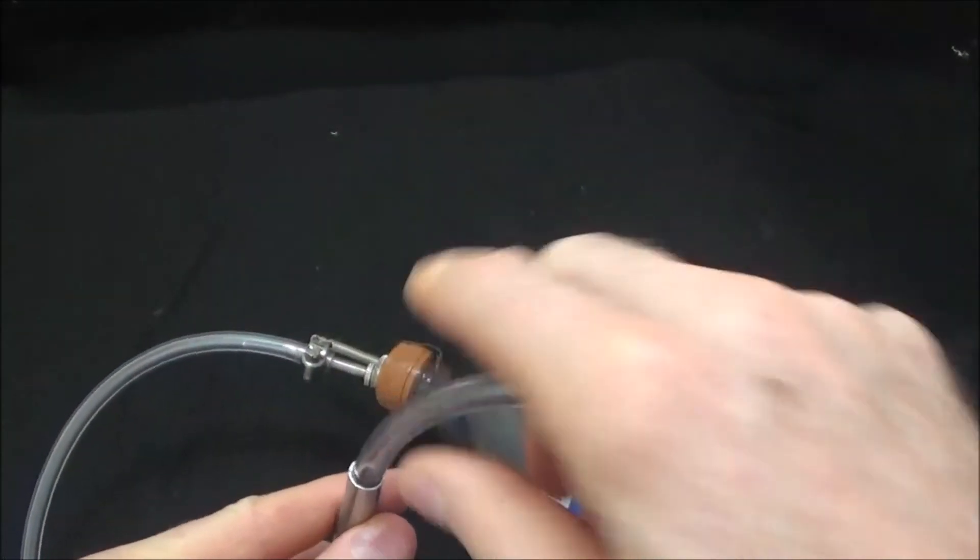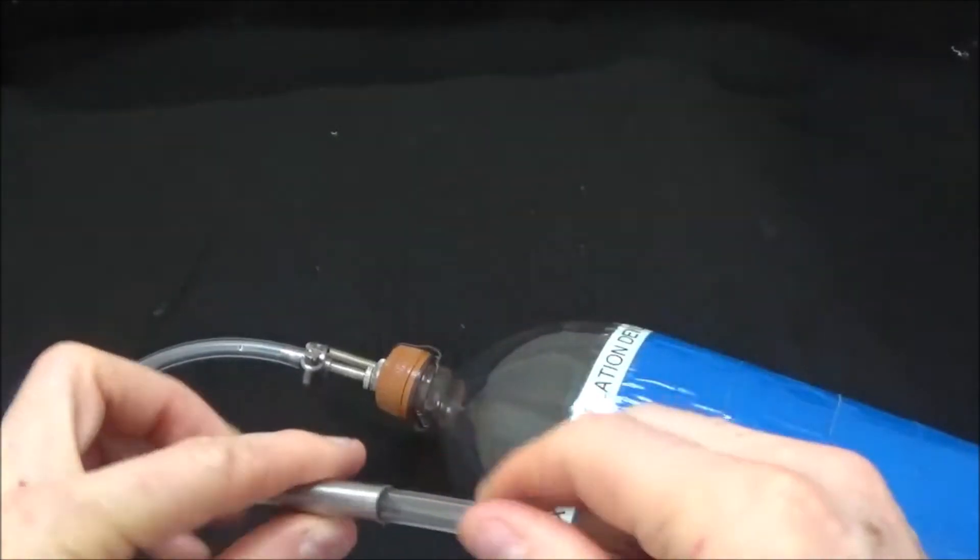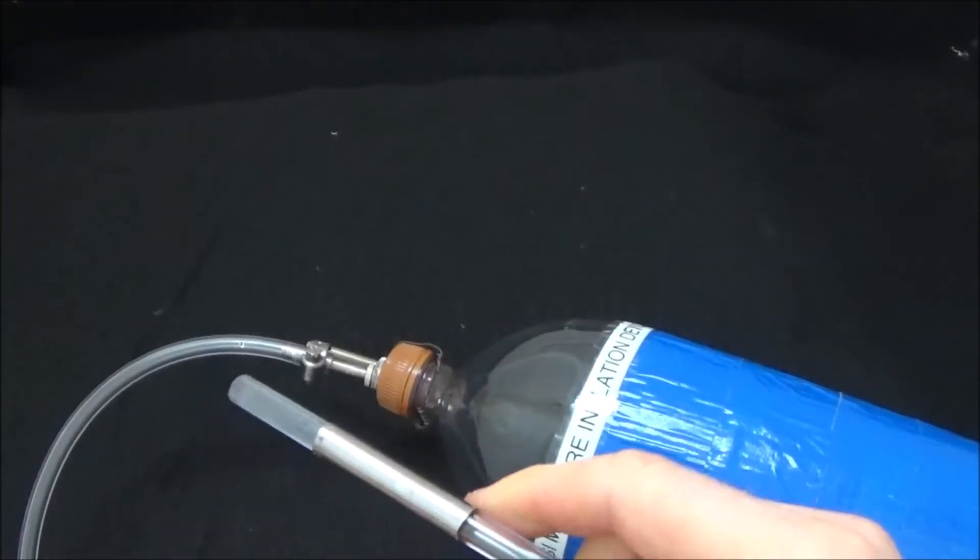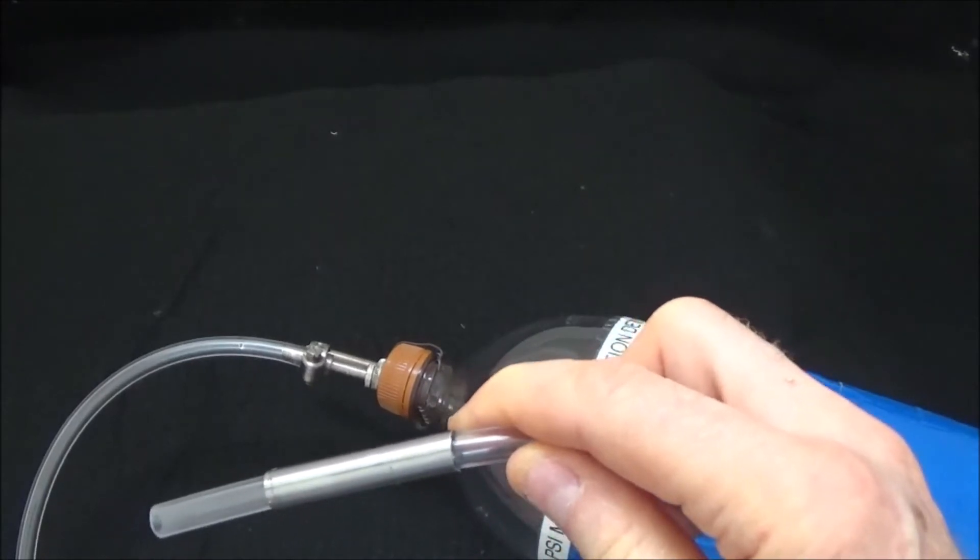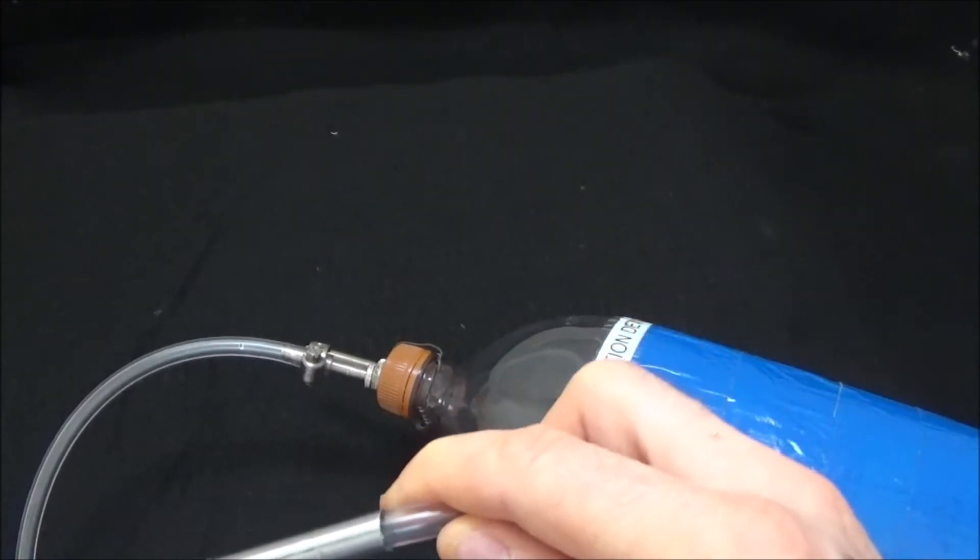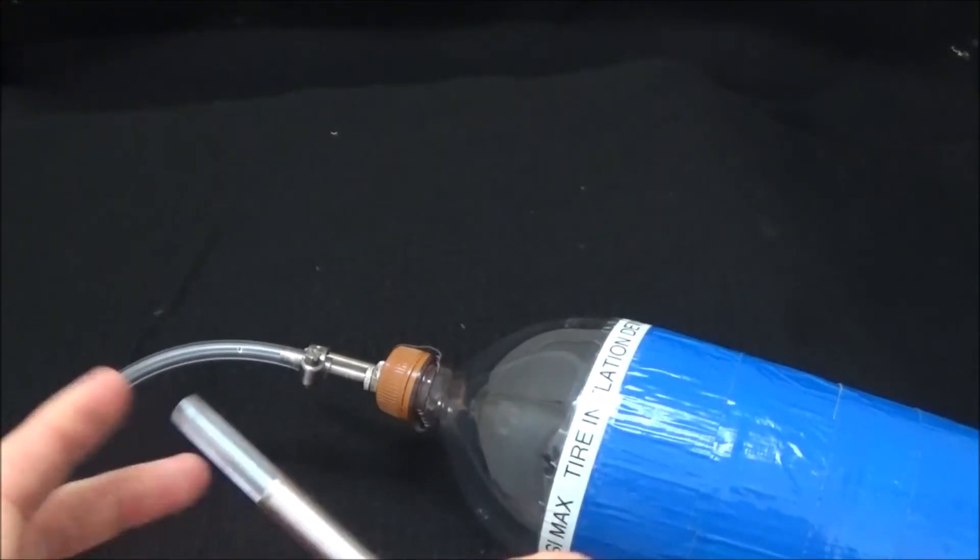It'll inflate the tire beautifully when you have the valve core removed. Once you've got all the air in the tire and the beads are seated, just stick that valve core in there real quick and tighten it up and you're good to go.